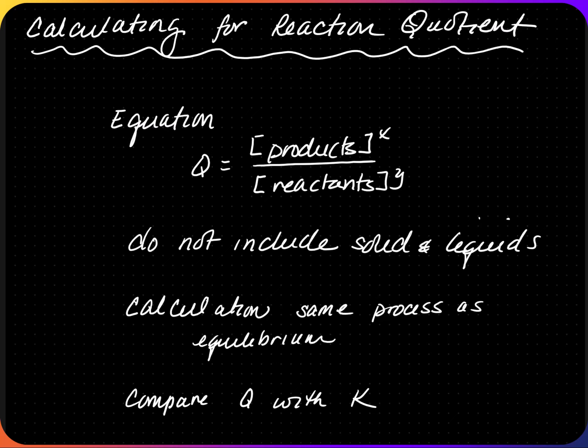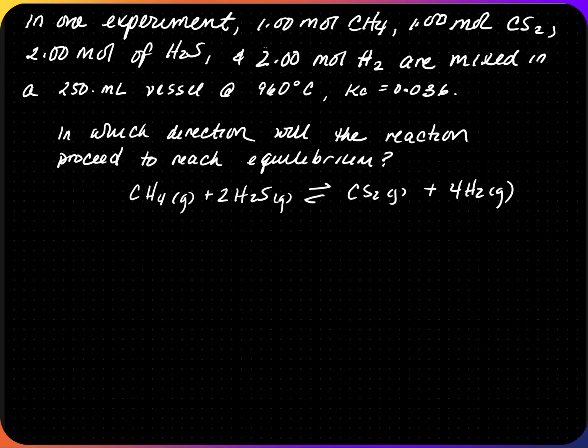After completing your calculations, compare Q with K to determine which way the reaction will shift. In this first problem, there is 1.00 moles of CH4, 1.00 moles of CS2, 2.00 moles of H2S, and 2.00 moles of H2 mixed in a 250 mL vessel at 960°C. Kc is given as 0.036. In which direction will the reaction proceed to reach equilibrium? This is a reaction quotient problem because they want you to determine which way the reaction will shift.